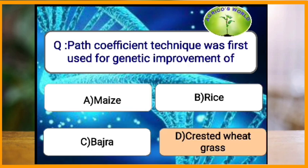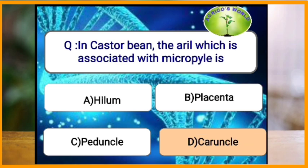Path coefficient technique was first used for genetic improvement of which crop? Path coefficient technique was first used for the genetic improvement of crested wheat grass. In castor bean, the aryl which is associated with the micropyle is known as caruncle.